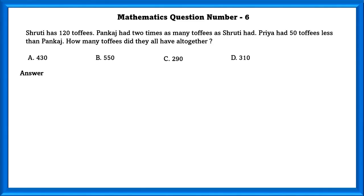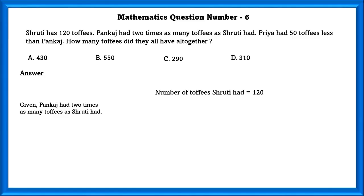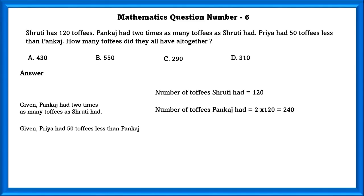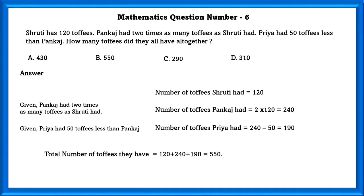Mathematics question number 6. Shruti has 120 toffees. Pankaj has 2 times as many toffees as Shruti. Priya has 50 toffees less than Pankaj. How many toffees did they all have together? Shruti equals 120. Pankaj equals Shruti × 2 equals 240. Priya equals Pankaj minus 50 equals 190. Total toffees equals 120 plus 240 plus 190, which equals 550.